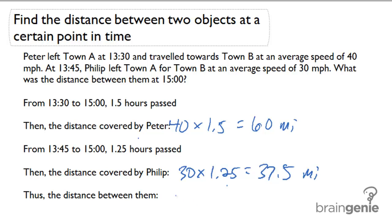Therefore, the distance between them, 60 minus 37.5 equals 22.5 miles.